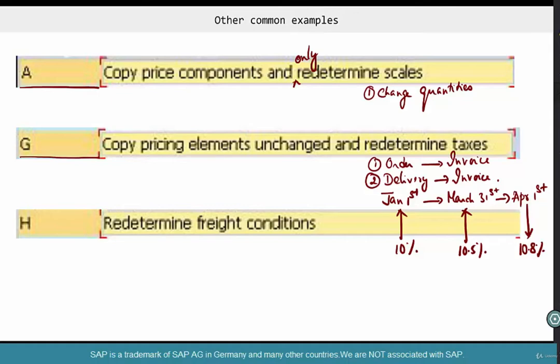When you create an invoice, always copy everything unchanged, manual things or whatever. Whatever you have done in your order, but redetermine taxes because this change in tax is not under your control. You're not responsible for it. So, you can let everything else remain the same, but tax is something that has to be determined at the time of invoice.